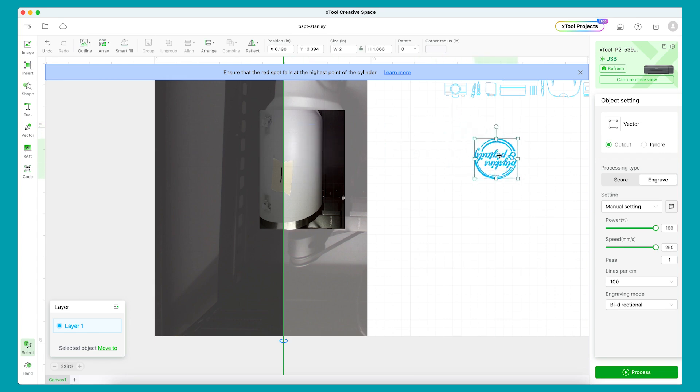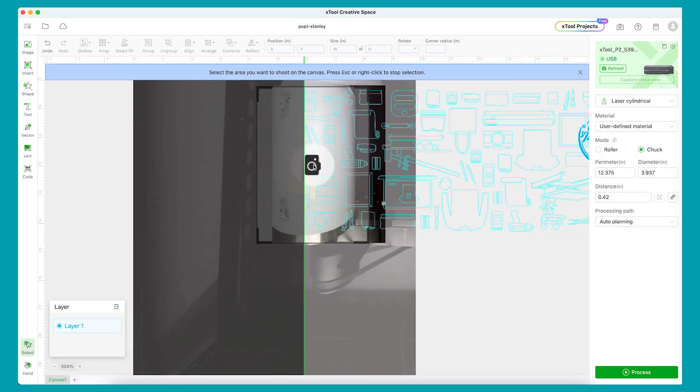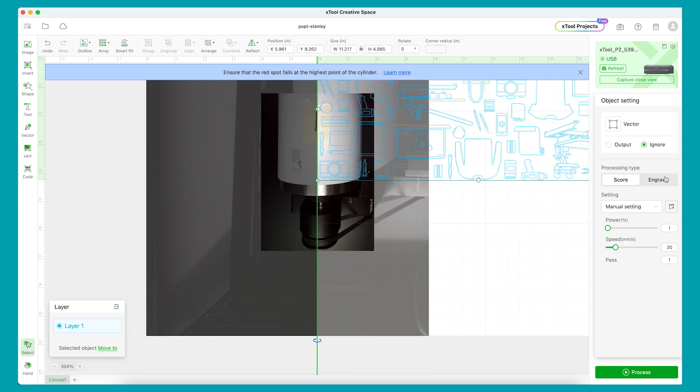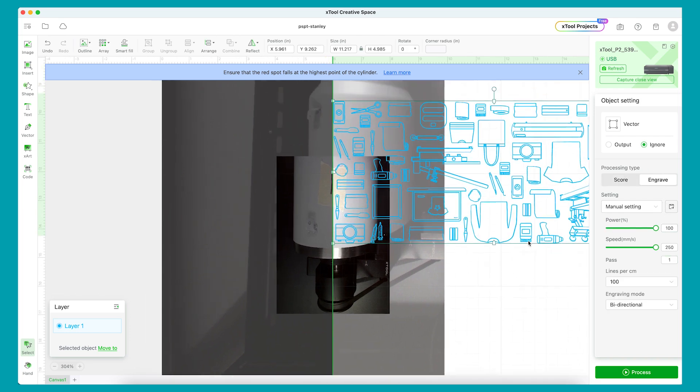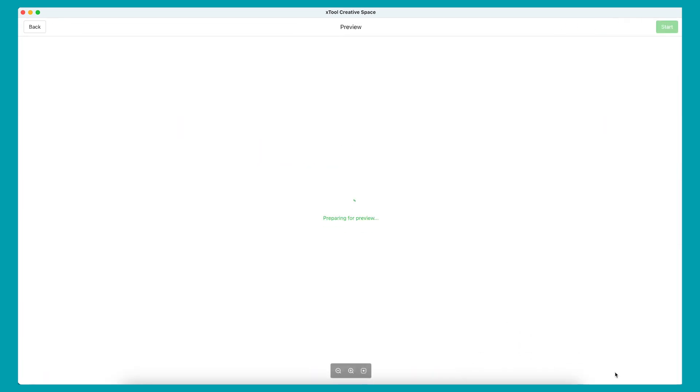Let's move the logo out of the way and change the output to ignore. Move the top wrap design in place and I use the capture tool to get a close-up view so I can make sure it's lined up perfectly. Make sure you've set to engrave with the same settings as before and change ignore to output. Now we're ready to engrave.